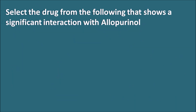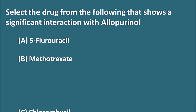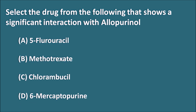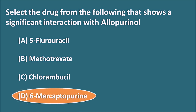Next question: select the drug that shows a significant interaction with allopurinol. A — 5-fluorouracil, B — methotrexate, C — chlorambucil, D — 6-mercaptopurine. The right answer is D — 6-mercaptopurine. Allopurinol shows a significant interaction with 6-mercaptopurine.